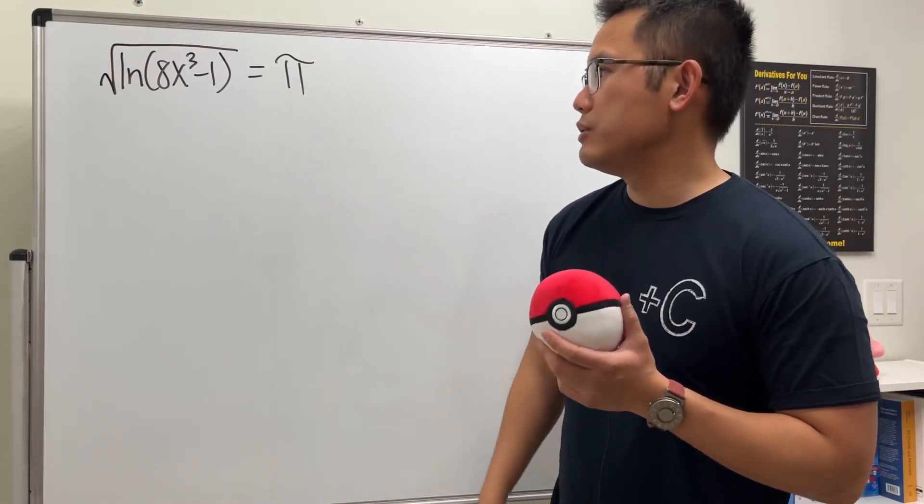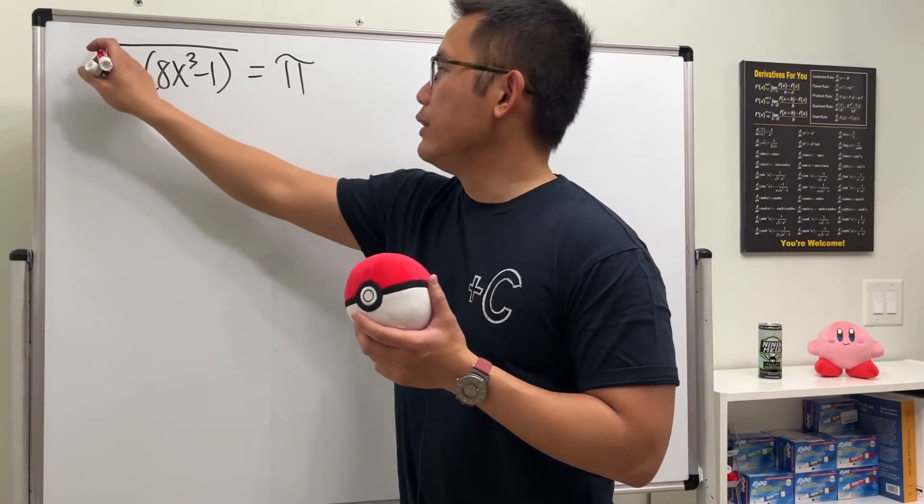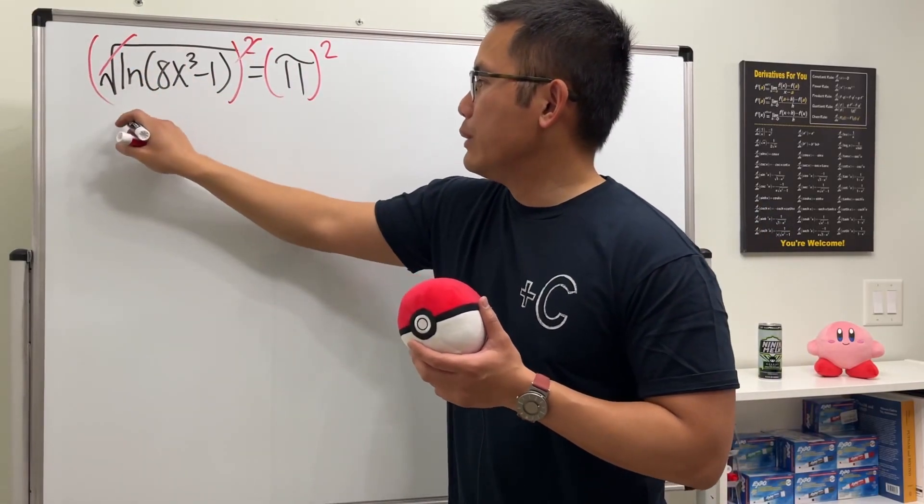So check this out. First, we will have to get rid of the square root, and to do so we can just square both sides. That's pretty nice, they cancel, and then we'll just have ln of 8x to the third power minus 1, and that's equal to π squared.